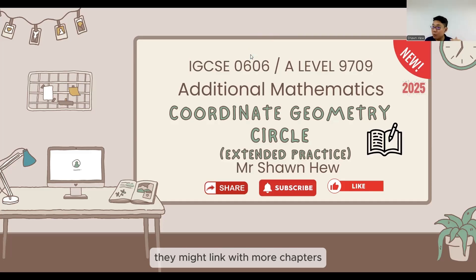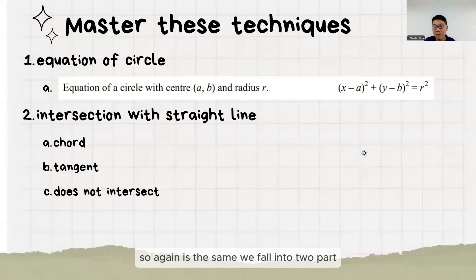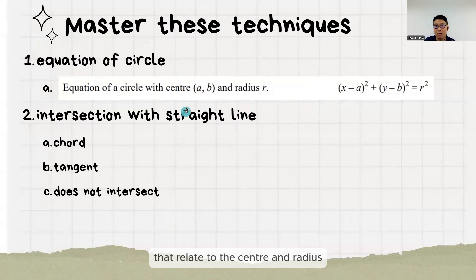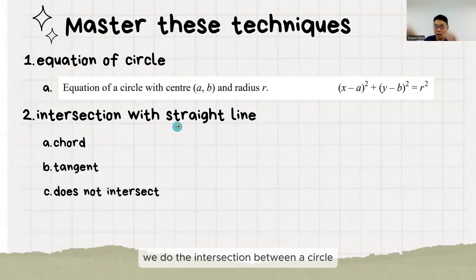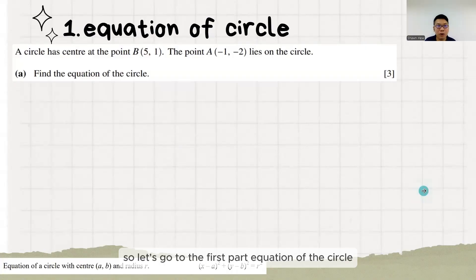These questions may link with more chapters and we will practice on them. We fall into two parts. First part, we use the equation of a circle that relates to the center and radius. And then the second part, we do the intersection between a circle with a straight line — either it's a chord, tangent, or does not intersect. So let's go to the first part: equation of the circle.